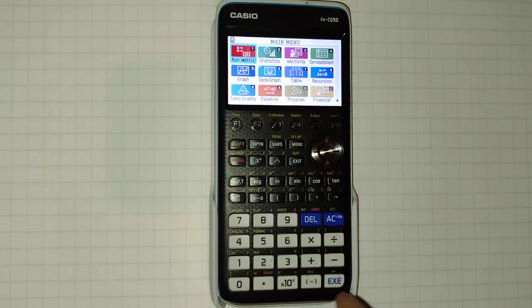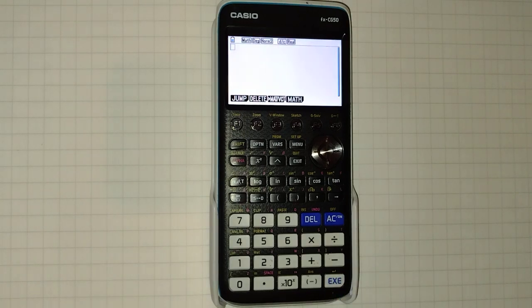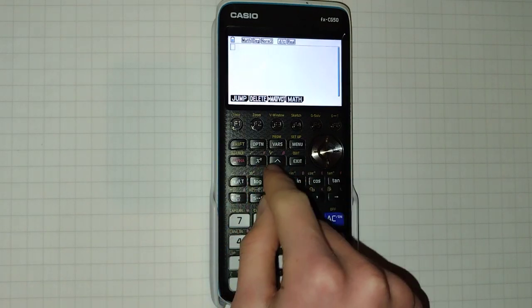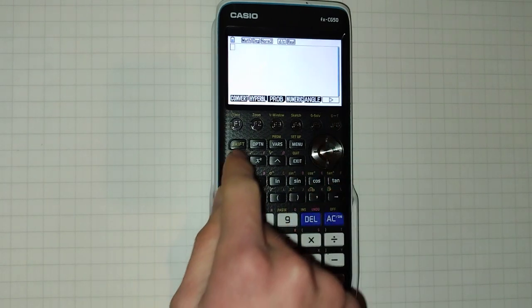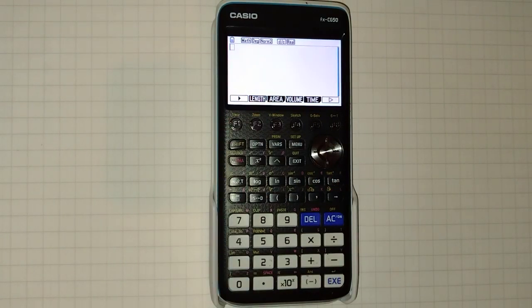So the unit conversions is done in the run matrix mode and to do so we're going to click option then F6 to go to the next page then F1 and this brings us to the convert menu.